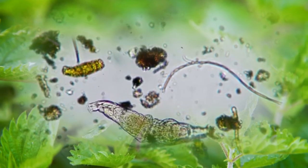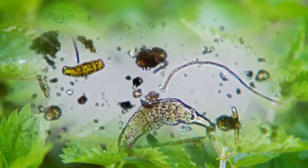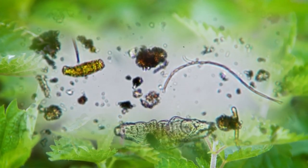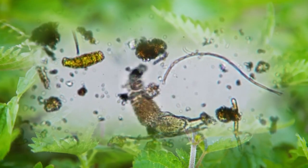These tiny creatures are alternatively referred to as jigger fleas, chigoe fleas, suthi, nigua, chica, and pico.